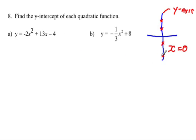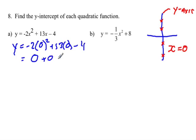So what we can do is substitute x equals 0 into our equation to find what y is going to be at that point. If we substitute x equals 0 in the first equation, this is going to be 0 squared, which is 0, times negative 2 is 0. So this is going to all come out to be 0, plus 13 times 0 is 0, minus 4.